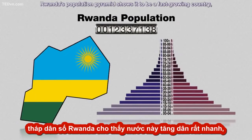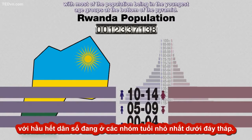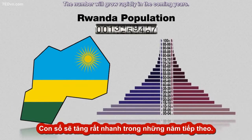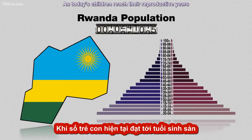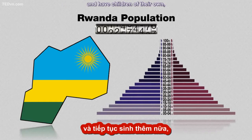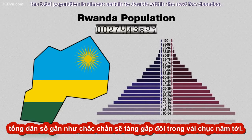For example, Rwanda's population pyramid shows it to be a fast-growing country, with most of the population being in the youngest age groups at the bottom of the pyramid. The number will grow rapidly in the coming years, as today's children reach their reproductive years and have children of their own, and the total population is almost certain to double within the next few decades.